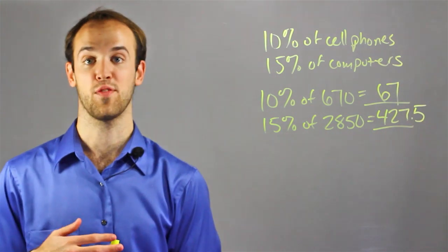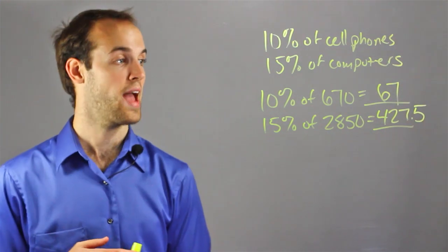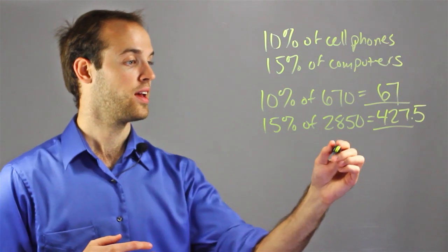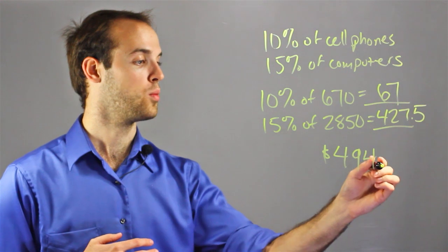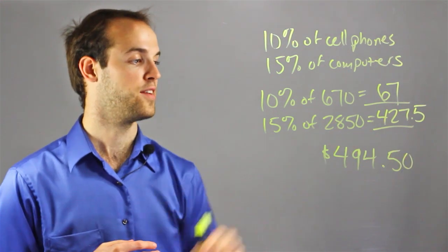So we could find out his total commission for that period of time just by adding the two numbers together. And it turns out this salesman is walking home with $494.50.